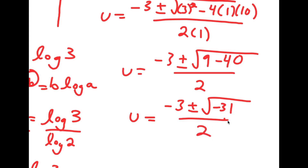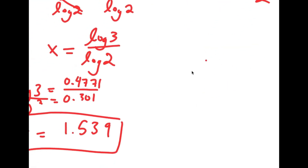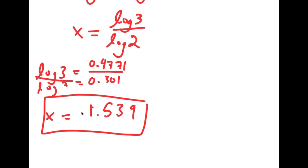Now, the square root of negative 31 involves a negative number under the radical, so that doesn't yield a real solution. Meaning my only valid solution is x approximately equal to 1.58.